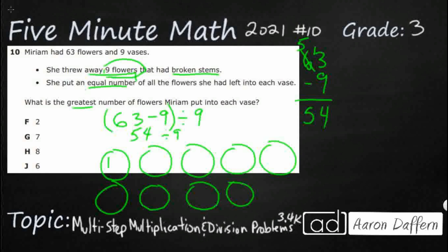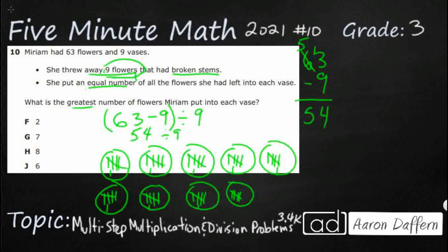I'm going to put one flower in each vase and keep going until we reach 54. Counting through: 9 times 2 is 18, 9 times 3 is 27, 9 times 4 is 36, 9 times 5 is 45. Continuing the count — 46, 47, 48, 49, 50, 51, 52, 53 — and 54. We've distributed all 54 flowers.